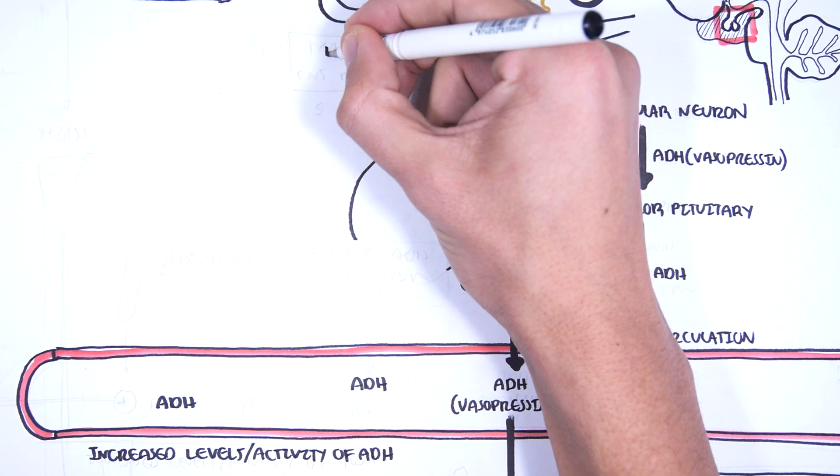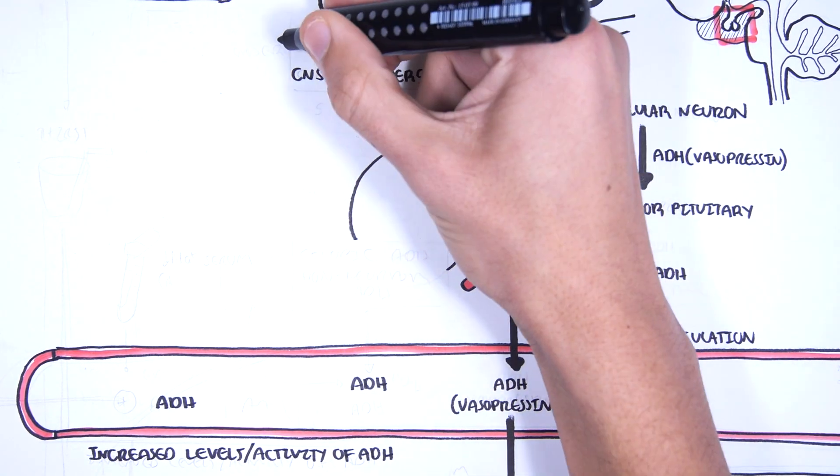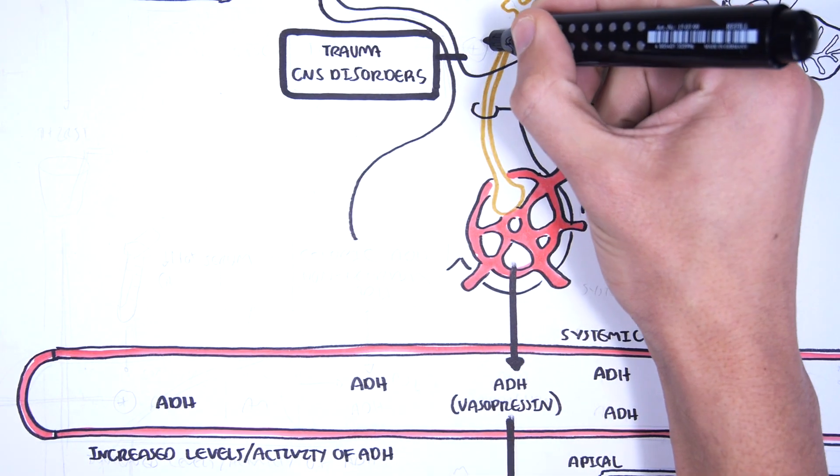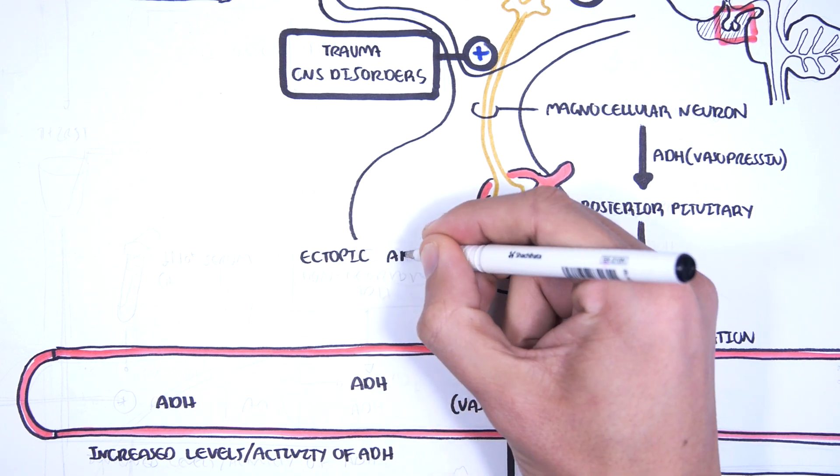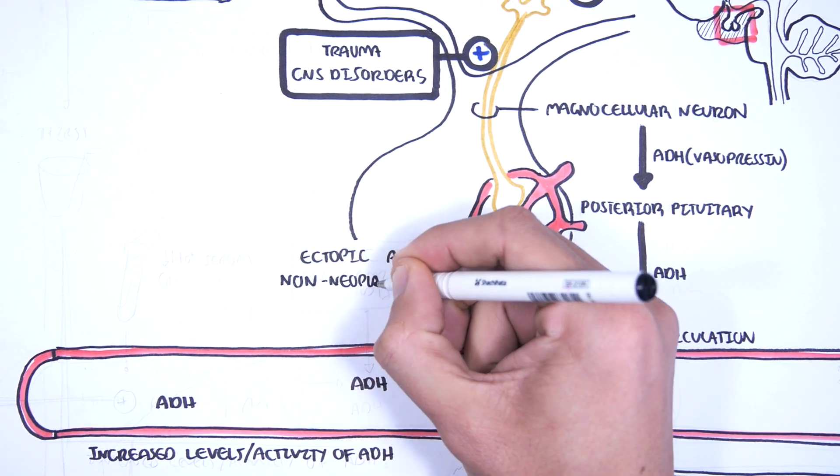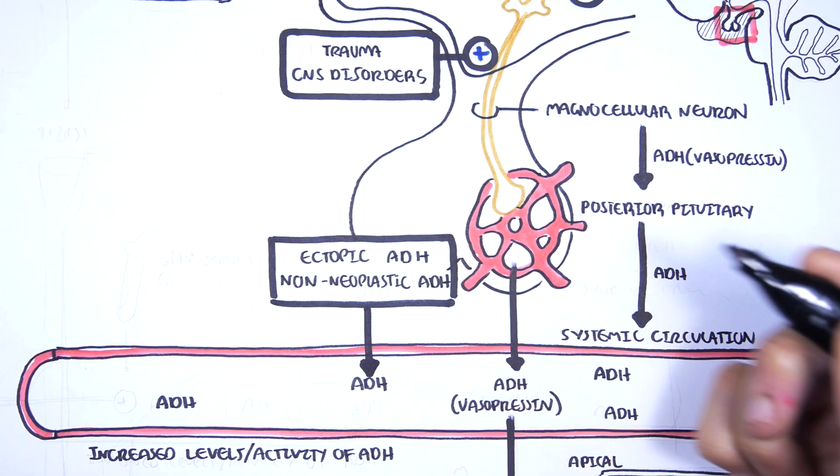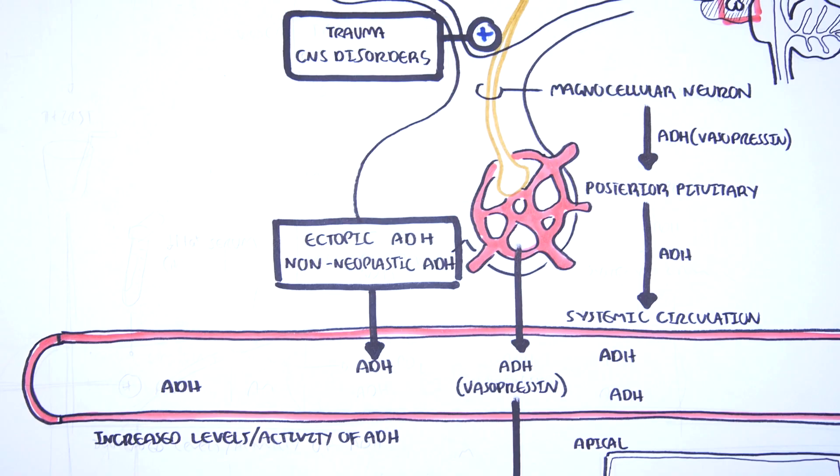Causes of syndrome of inappropriate antidiuretic hormone secretion include trauma to the brain or the pituitary area, central nervous system disorders or infections such as meningitis, as well as ectopic ADH production such as from lung cancer, or even non-neoplastic ADH such as from respiratory infections.